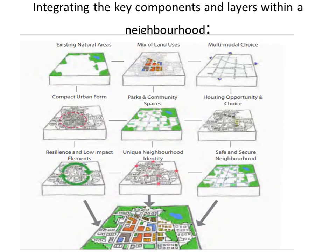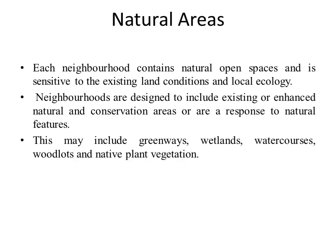This slide shows the key components and layers of neighborhood. It includes: existing natural area, mix of land uses, multimodal choices, compact urban form, parks and community spaces, housing opportunity and choice, resilience and low impact elements, unique neighborhood identity, safe and secure neighborhood. We are going to see these components of neighborhood planning one by one.